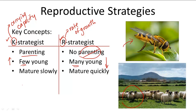K-strategists' offspring mature slowly, whereas R-strategists' offspring mature quickly. Again, this goes back to parenting. K-strategists can parent their offspring until they're done maturing, giving their offspring a lot of time to mature — that's why they mature slowly. But R-strategists don't have any parenting, so the offspring must mature quickly to learn how to survive by themselves in the environment.